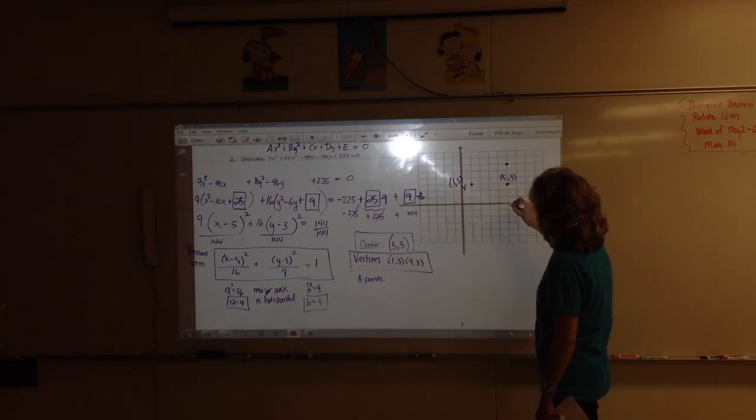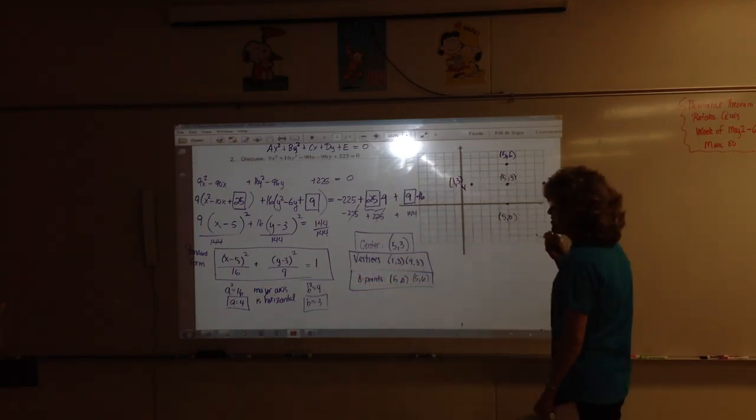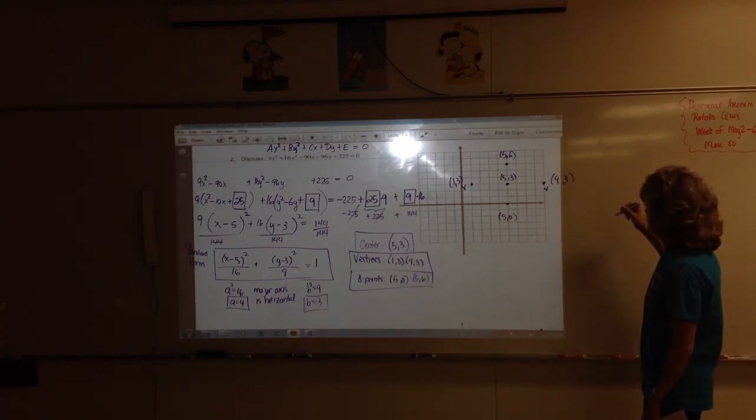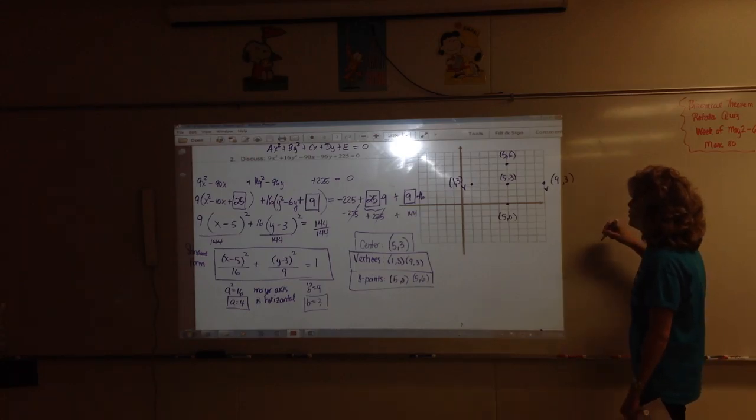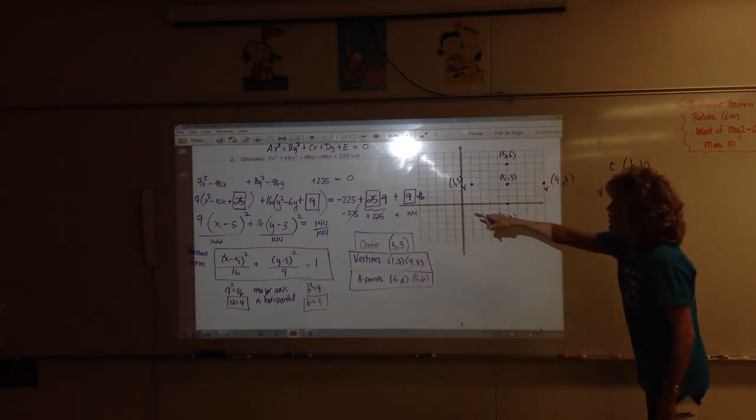Then we have to find the B points. The B points are sort of the unofficial vertices. And they come from, over here, if A squared was 16 then B squared is 9, so B equals 3. Put it in a box. Three then is the distance from the center on the minor axis. We go 1, 2, 3 and 1, 2, 3. Where does that put us? Still out 5 but up zero, and out 5 but up 3 higher than the center, so 5, 6. The B points are at 5, 0 and 5, 6. Put those in a box.